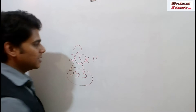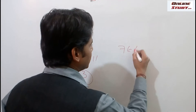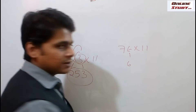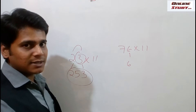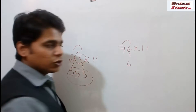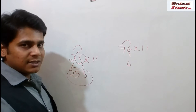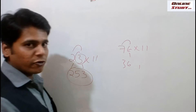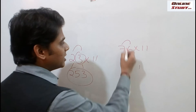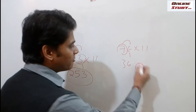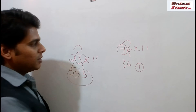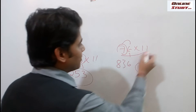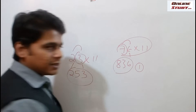We shall see another example: 76 into 11. Place 6 as it is, since it is the units place. Now add units and tens: 6 and 7 is 13. We will place 3 and 1 will be carried forward. The next step is we need to place 7, but since we have a carry forward, we need to add them: 7 plus 1 is 8. So the multiplication of 76 into 11 is 836.